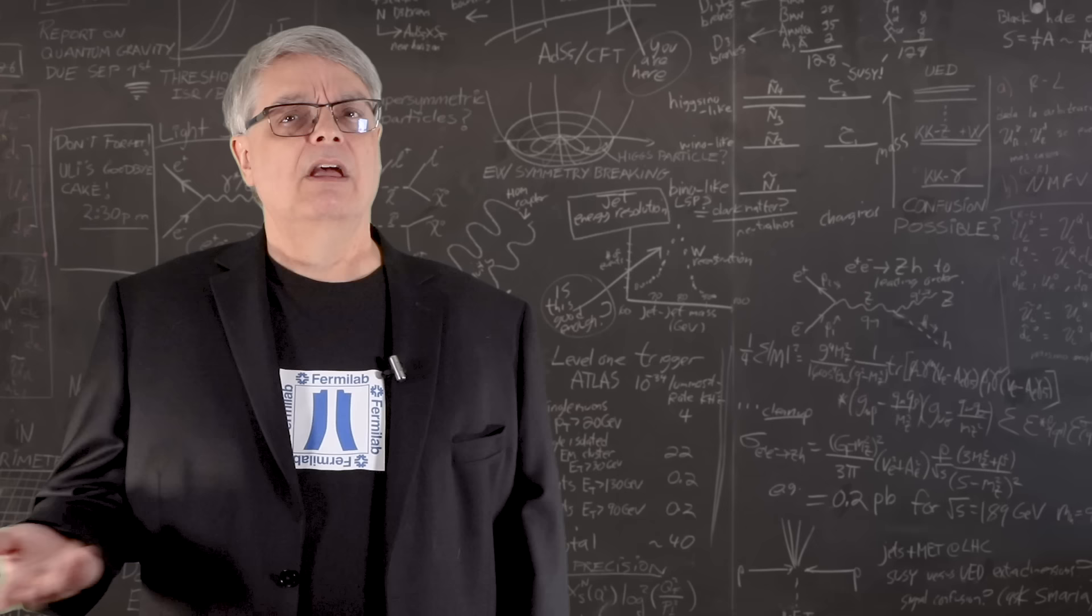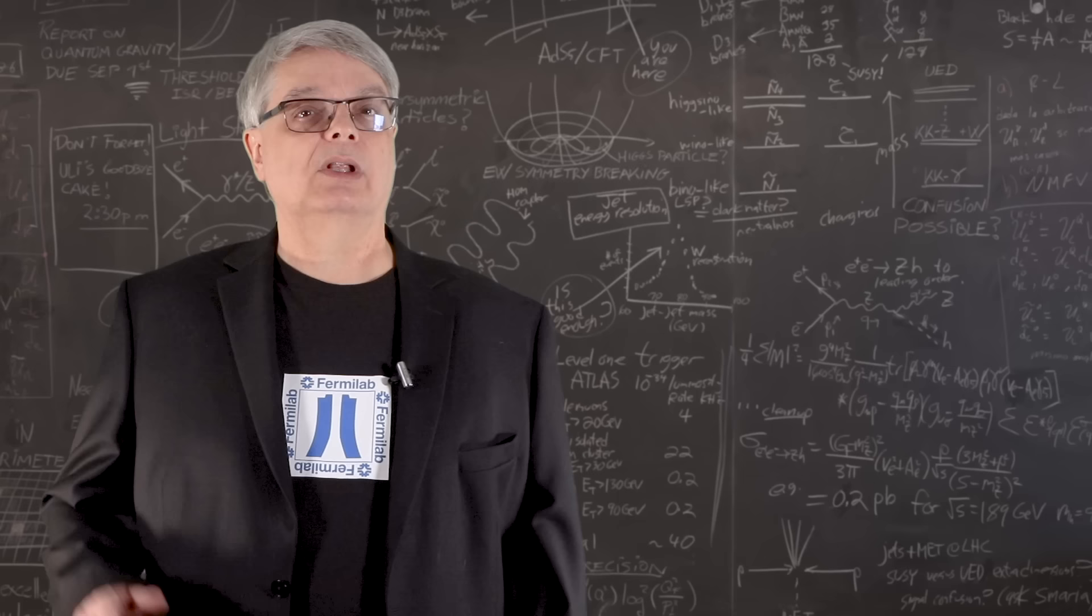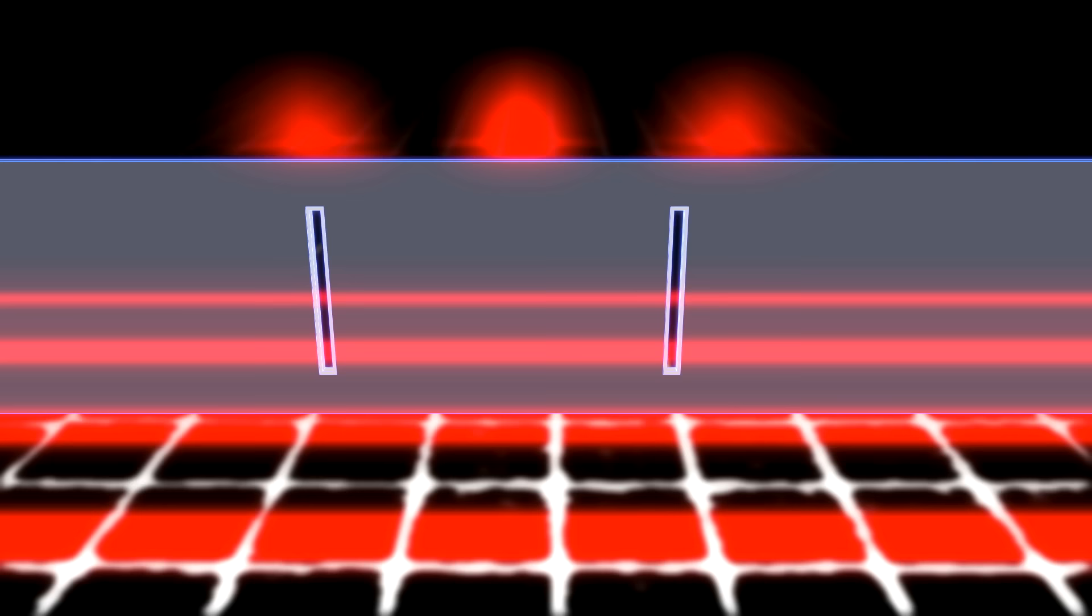Of course, water waves are not the only type of waves. Light is also a wave made of oscillating electric fields, and those electric fields can interfere either enhancing each other or canceling each other out. If you send a laser beam through two slits, you can see this phenomenon.